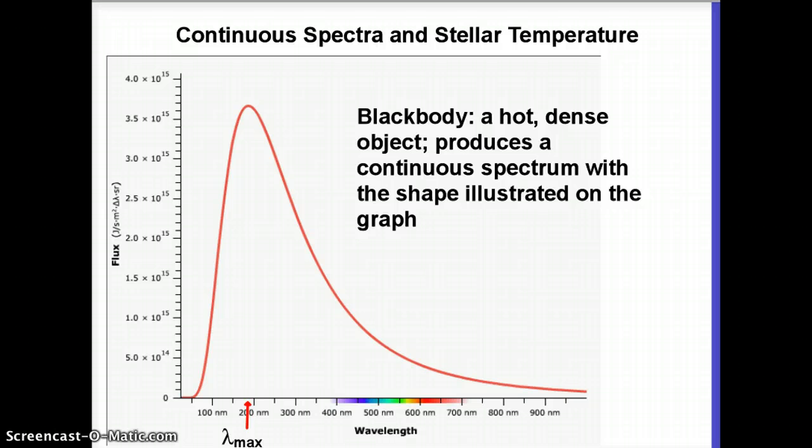And all of the continuous spectra produced by black bodies have the same basic shape. They sort of start over here on the left at low wavelength. They go up to a peak and then they come back down and sort of gradually trail off. It's not a symmetric graph. So the right side does not look the same as the left side. This is not a perfect bell curve.